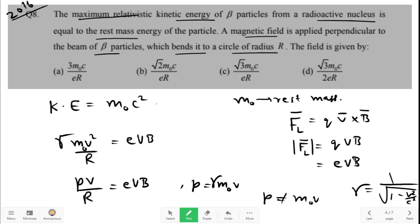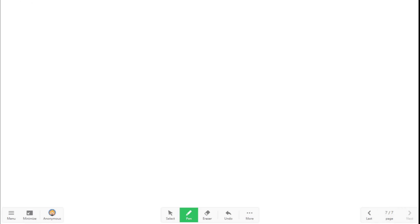Now from pv/R equals evB, we get p is equal to eBR. Let us name this equation 1. We will come back here later.